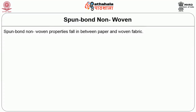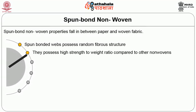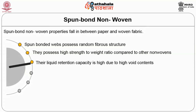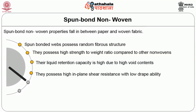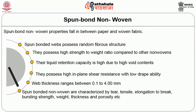Some of the properties of spun-bond technology: spun-bonded webs are manufactured in a wide range from very light flexible structures to heavy and stiff structures. Their properties fall in between paper and woven fabrics. Spun-bonded webs possess random fiber structure and high strength to weight ratio compared to other nonwovens. Their liquid retention capacity is high due to higher void content. They possess high in-plane shear strength with low drapability. Web thickness ranges between 0.1 to 4 mm. Spun-bonded nonwovens are characterized by tear strength, elongation to break, bursting strength, weight, thickness and porosity.